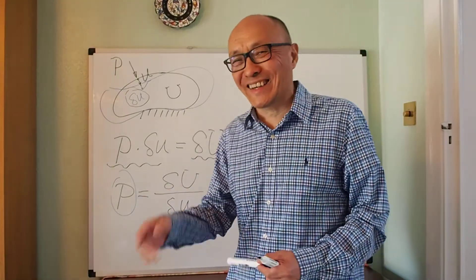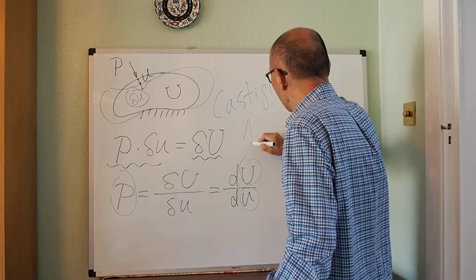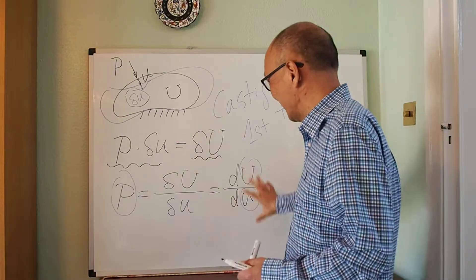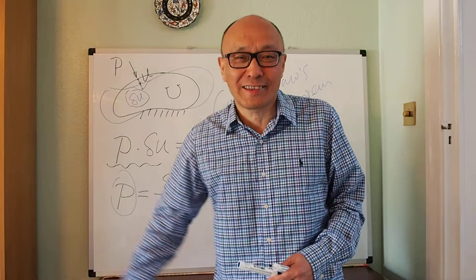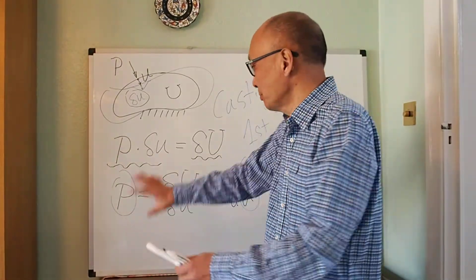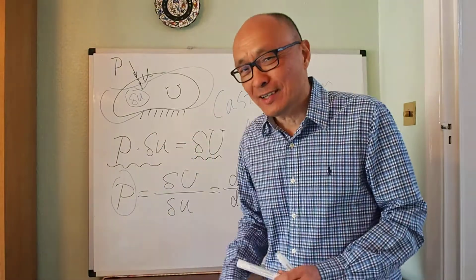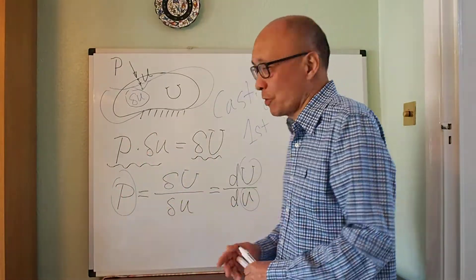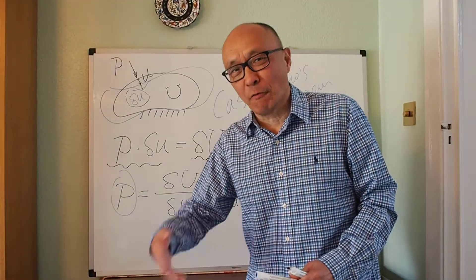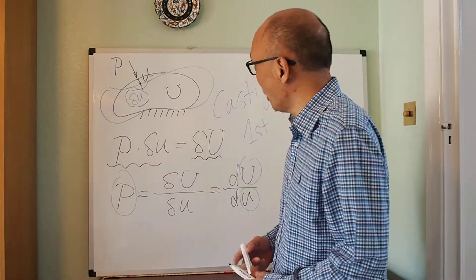This is called Castigliano's first theorem. It was established a long, long time ago — hundreds of years ago — and it was a very nice theorem. People sort of forgot about it because it wasn't very useful until the computer age. There is a Castigliano's second theorem which textbooks talk about a lot, and people use that, but the first theorem itself becomes the foundation of the finite element method.